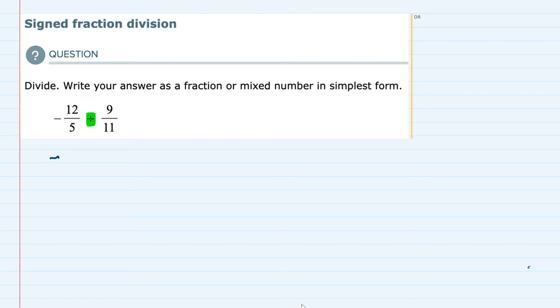We keep the first fraction the same, change the division to multiplication, and use the reciprocal of the second fraction. That means we flip the second fraction, and it becomes 11 over 9.